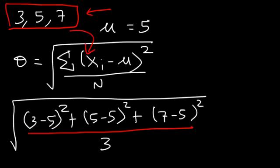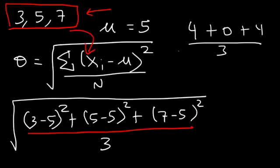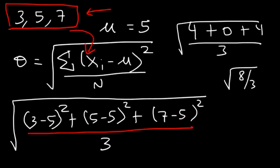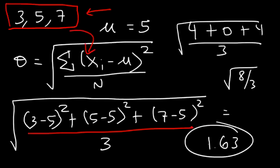3 minus 5 is negative 2; negative 2 squared is 4. 5 minus 5 is 0. 7 minus 5 is 2; 2 squared is 4. 4 plus 0 plus 4 is 8, so we have the square root of 8 divided by 3. Using a calculator, 8 divided by 3 is about 2.67, and the square root of that is approximately 1.63. So the standard deviation for 3, 5, and 7 is about 1.63.